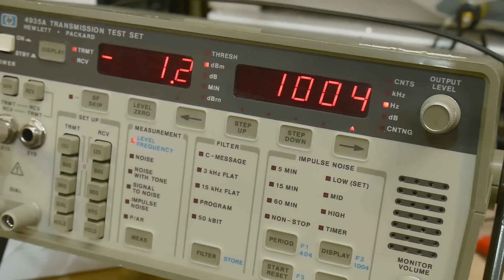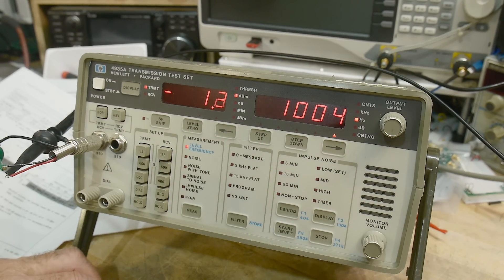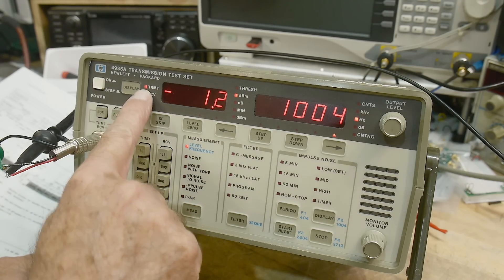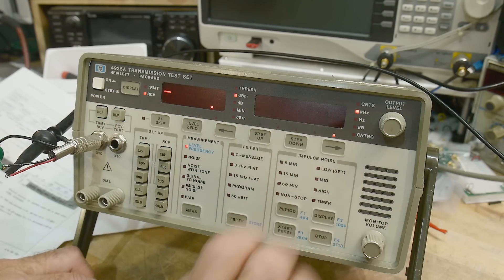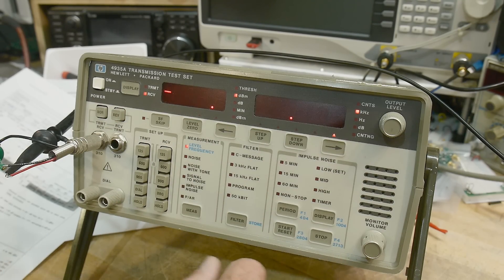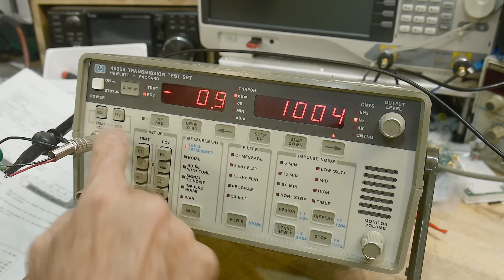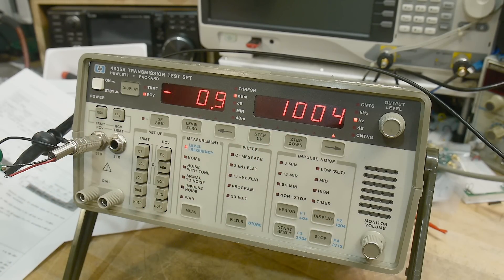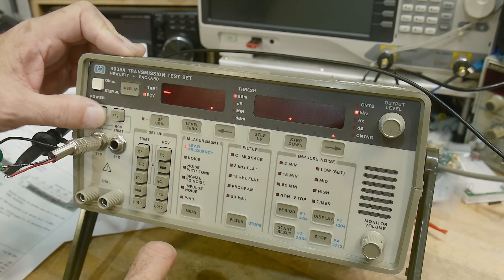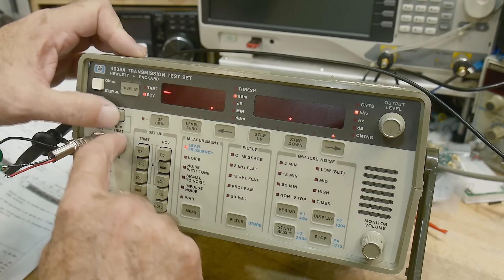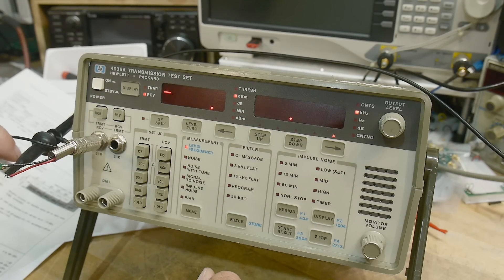That is the output section. Let's take a look at the input section. We can change the display between transmit—so this is what we're transmitting—and we can go over to receive, and this is what we're receiving. We're not receiving anything at all. If I push both buttons at the same time, that's supposed to loop the input to the output, and so we are seeing the same thing, 1004. It can hear itself.